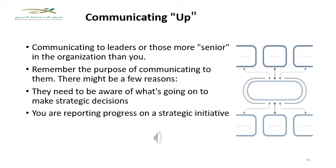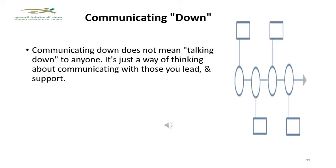Communicating up means communicating with leaders or those more senior in your organization. Remember the purpose — they may need to be aware of what's going on to make a strategic decision, or you are reporting progress on a strategic initiative. Be careful to give only key points that require their support, not excessive details. Communicating down refers to communicating with those you lead and support — for example, your employees, coworkers, or team members.